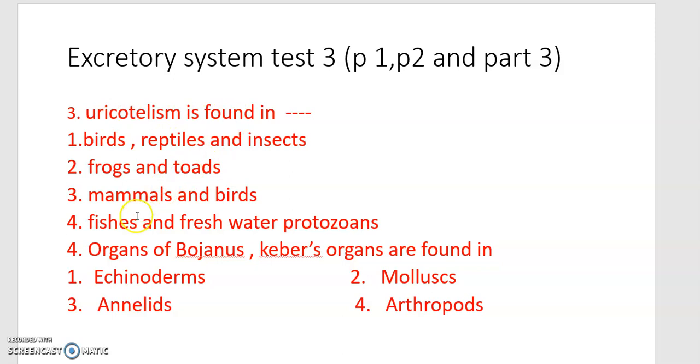Uricotelism is found in the fourth option. Organs of Bojanus and Keber's organs are found in: echinoderms, molluscs, annelids, and arthropods.